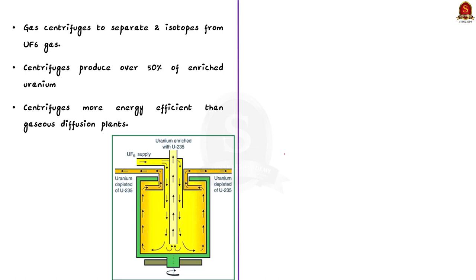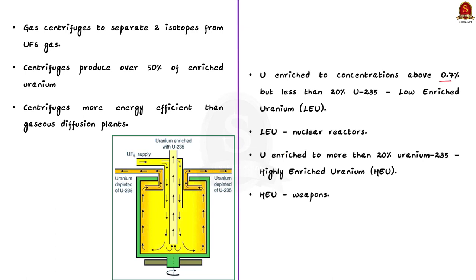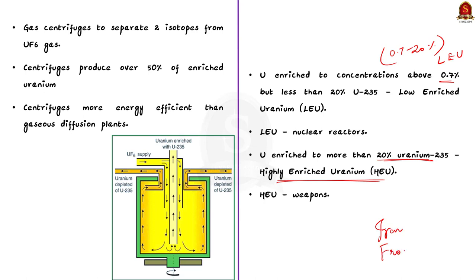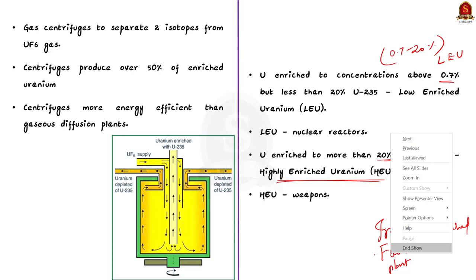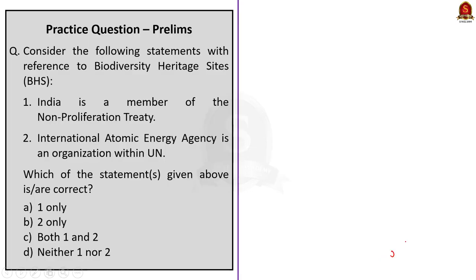Uranium enriched to concentrations above 0.7% but less than 20% uranium-235 is defined as low-enriched uranium. Most nuclear reactors around the world today use low-enriched uranium at about 3–5% uranium-235. Uranium enriched to more than 20% uranium-235 is defined as highly enriched uranium, and this is what is used in nuclear weapons. Through this discussion, we have seen about uranium mining, uranium isotopes, and the uranium enrichment process.